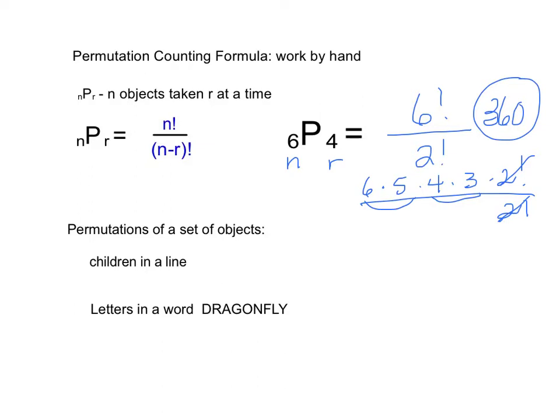The permutation of children in a line or letters in the word dragonfly have to do with the fundamental counting principle, which is a permutation in a way. So children in a line where order matters is a permutation. For instance, if there are, say, five children in a line,